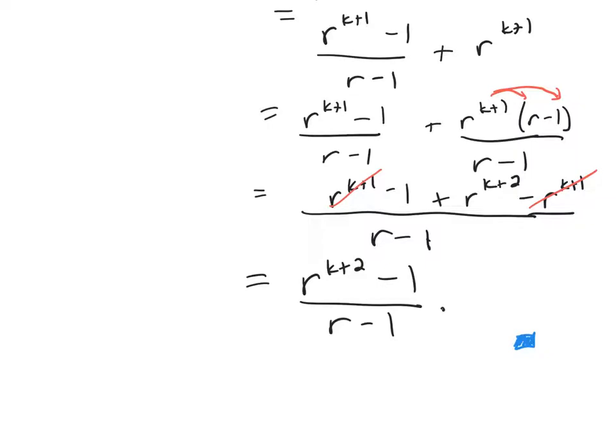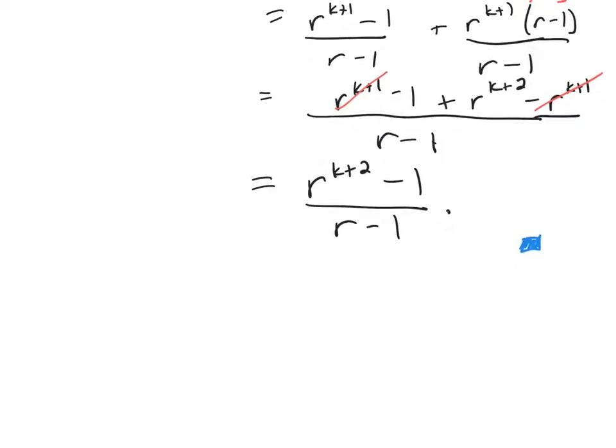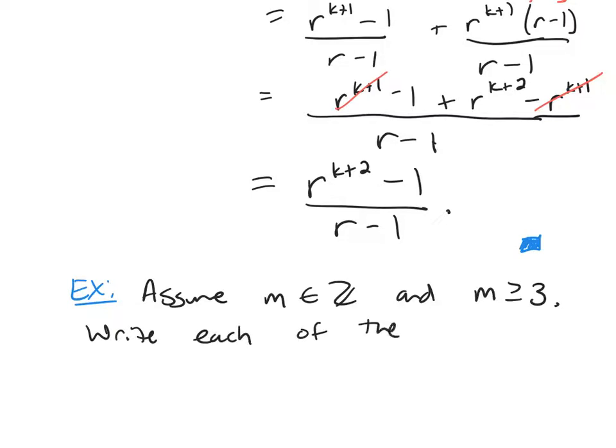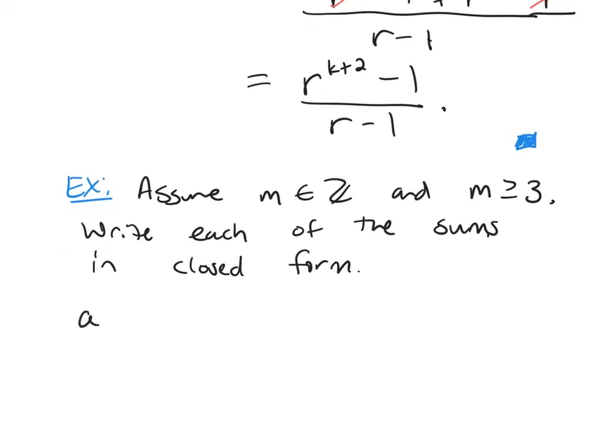And now what I want us to do is use that formula to help us do some computation. Assume m is an integer, and it's greater than or equal to 3. Write each of the sums in closed form. So let's start with our first one, 1 plus 3 plus 3 squared plus 3 to the m minus 2.